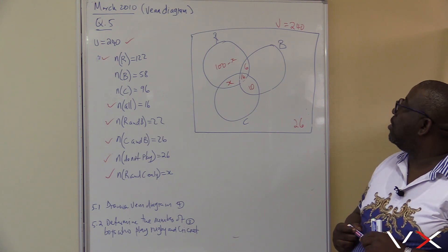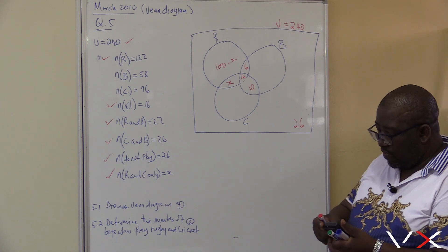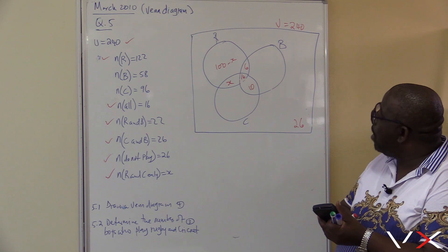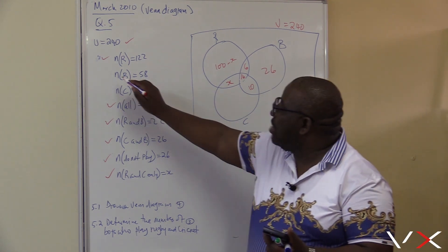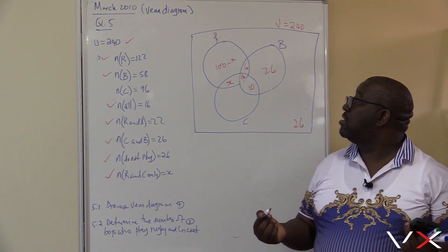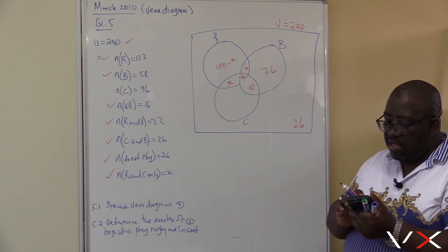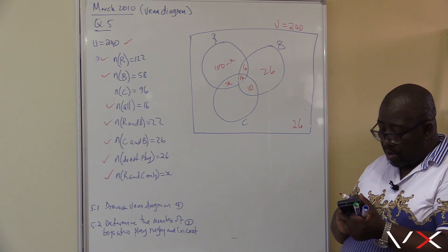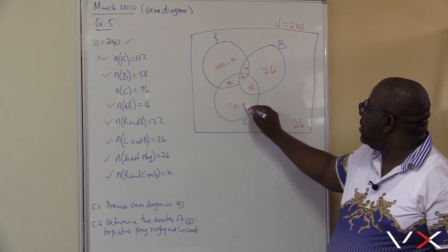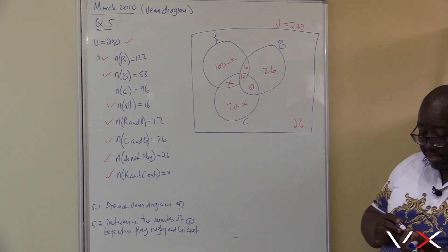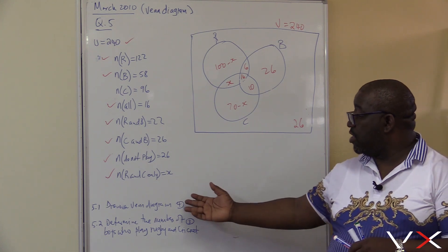Let me go to those that play basketball. The total for basketball is 58, so it's 58 minus 26 minus 6, and we'll be left with 26 for basketball only. Then we go to those learners that play cricket. The total for cricket must be 96, so it will be 96 minus 16 minus 26, which gives us 70 minus X. This is our complete Venn diagram, and we get full marks for correctly filling it in.